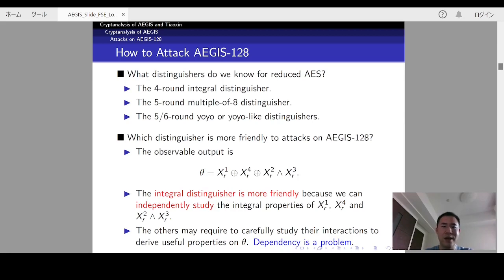So, how to analyze the security of such a construction? From its description, it's clear that AES and AEGIS-128 are very similar. So, it is inevitable to use some distinguishers for reduced AES to start it. For such distinguishers, we have the 4-round integral distinguisher, the 5-round multiple of 8 distinguisher, and the 5-6-round yoyo or yoyo-like distinguishers.